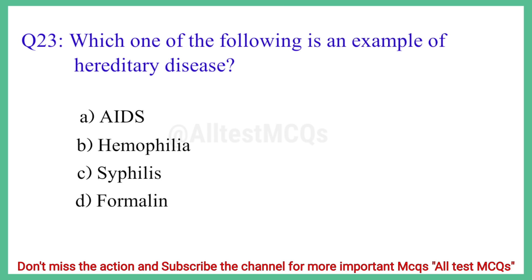Question No. 23: Which one of the following is an example of a hereditary disease? The correct answer is option B: Hemophilia.